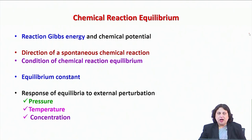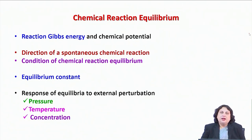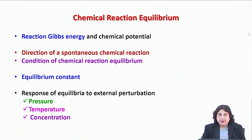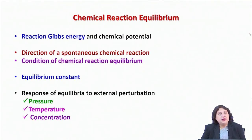We have already seen how the chemical potential, while it is a very general concept, it cannot be measured easily. As a result, this concept is not practically implementable. Therefore, we had to devise alternative methods which are functions of these chemical potentials. In this context, we introduce the reaction Gibbs energy to predict the direction of a spontaneous chemical reaction, and also to predict the condition of chemical reaction equilibrium.